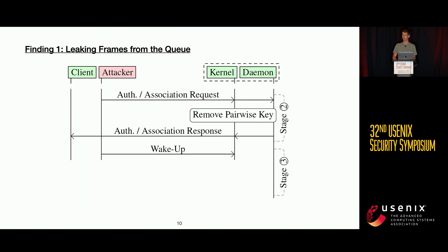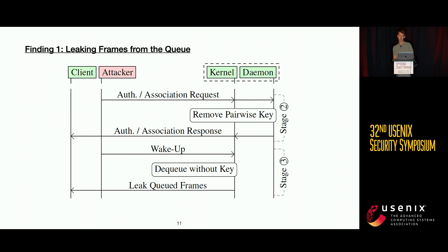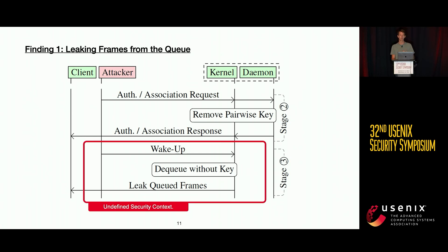Once the key is removed, the data in the queues is not always cleared. The attacker then sends a wake-up frame telling the access point 'I'm done saving energy, start transmitting data again.' The access point transmits from the kernel queue, but there are no longer encryption keys belonging to this client, so the access point leaks these queued frames.